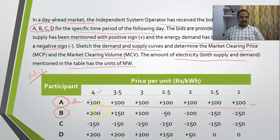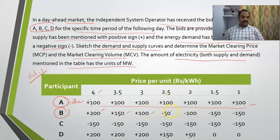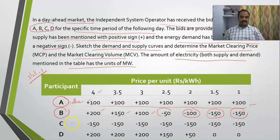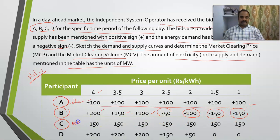Coming to participant B: if the price is too high he is ready to sell 200 megawatts, but as the price goes down he wants to reduce his generation. If the price is very low, instead of selling he wants to buy electricity — he may use it as storage. The negative values indicate demand.